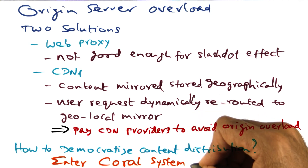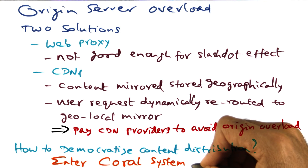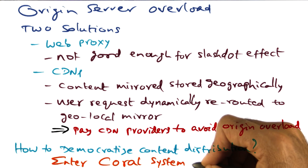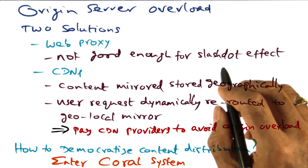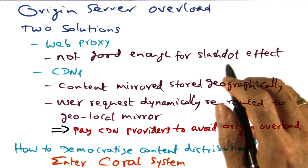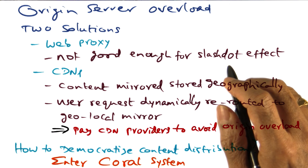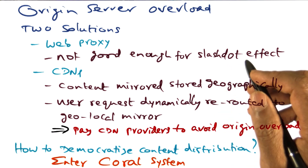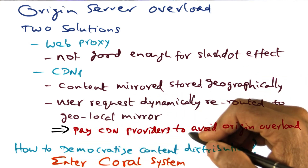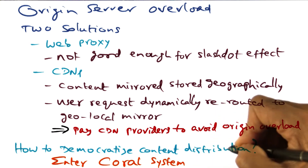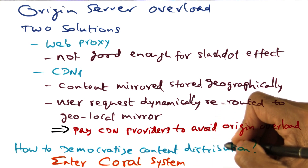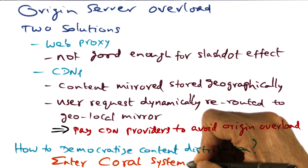So the Coral system addresses two issues. The first issue is the fact that if I generate some content and I want to store the key-value pair associated with the content in a DHT, I have to have a scalable way of doing it without saturating any particular node which can serve as a metadata server — so we want to avoid the tree saturation effect. And the second thing that we want to do is also avoid the origin server overload. So both of those things are being addressed in providing a democratic solution for content distribution for the average Joe that may want to generate some content and share it with the rest of the world. We will look at the details of the Coral system in the rest of this lecture.